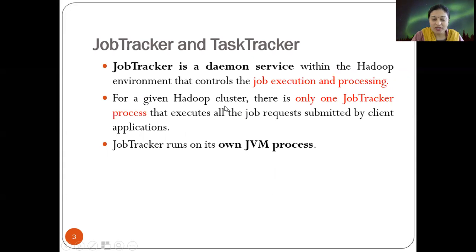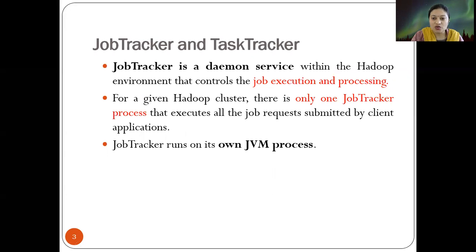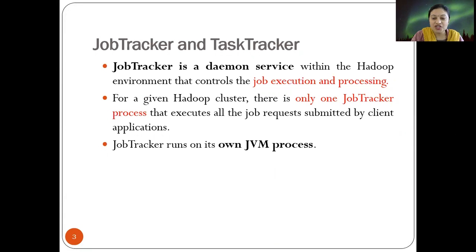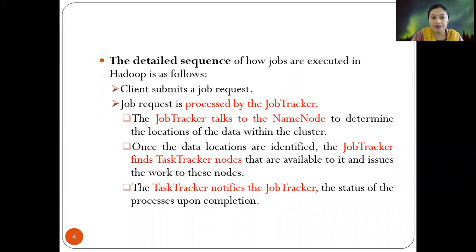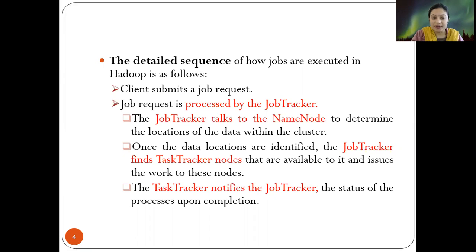A job is a top-level execution, and for a given Hadoop cluster there is only one job tracker process that executes all job requests submitted by client applications. There is one JVM running as the job tracker process. Let us now see the detailed sequence of how jobs are executed in Hadoop.